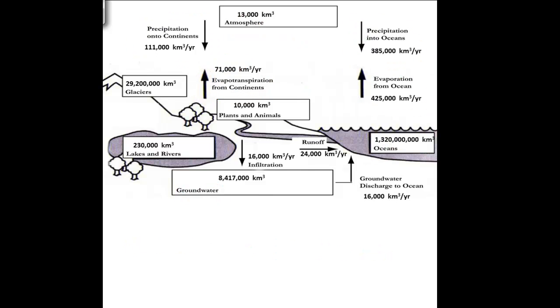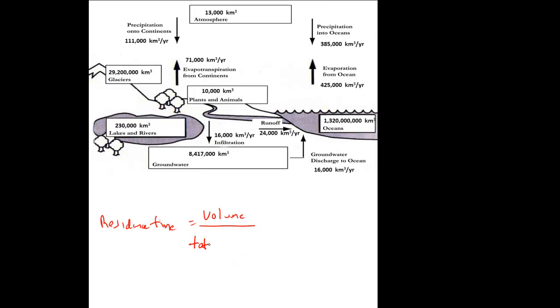We can also think about the water cycle in terms of residence times. The average amount of time water remains in a given reservoir. The residence time equals the volume of that reservoir divided by the total fluxes in or out of that reservoir, but not both. You can add up the total fluxes in or you can add up the total fluxes out. You're dividing the volume by that number.